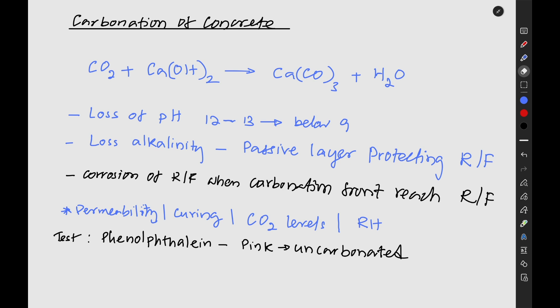Due to this reaction, the pH in the concrete gets reduced. In general, the pH of concrete is in the range of 12 to 13, but with this reaction the pH value is reduced to around 8 to 9. With this reduction, the concrete becomes a weaker material and the alkalinity in the concrete is reduced or lost.